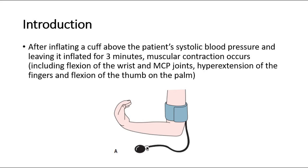This is the description of Trousseau's sign. After inflating a cuff above the patient's systolic blood pressure and leaving it inflated for 3 minutes, muscular contraction occurs. This includes flexion of the wrist and MCP joints, hyperextension of the fingers, and flexion of the thumb on the palm. These show a positive Trousseau's sign.